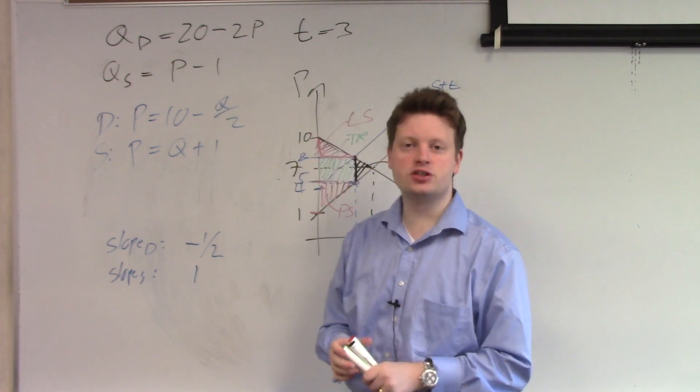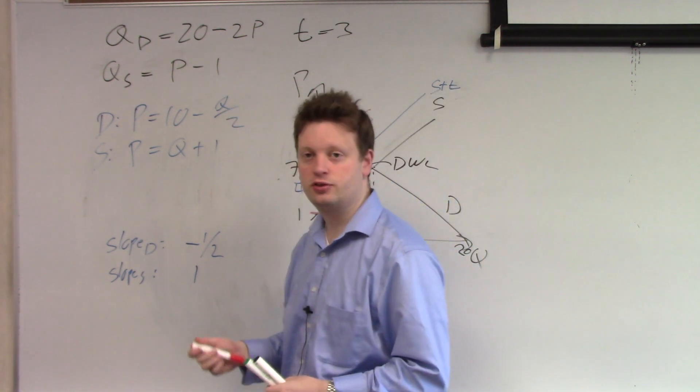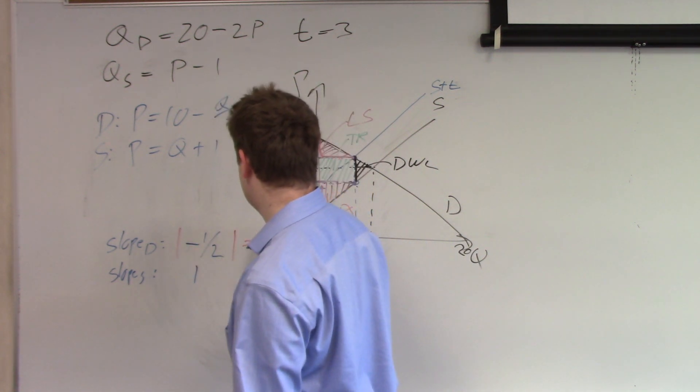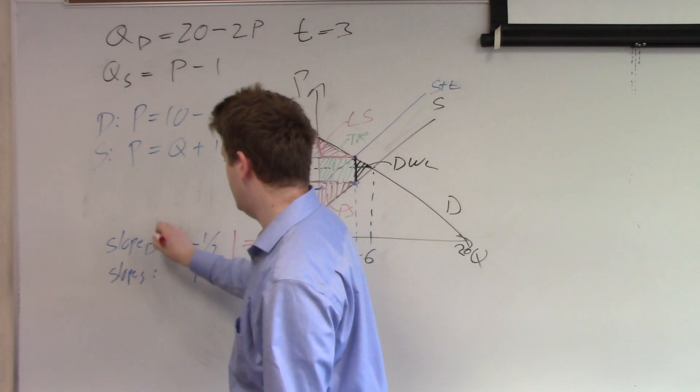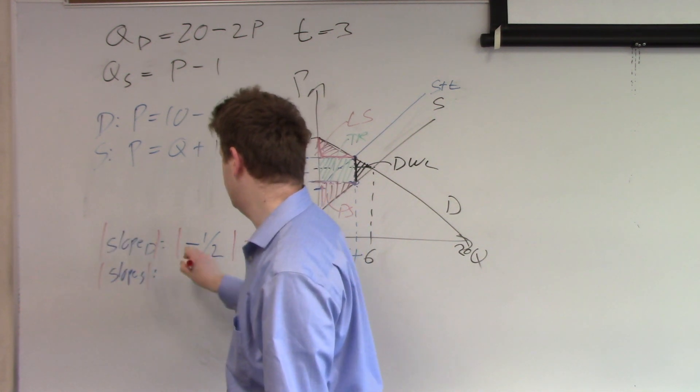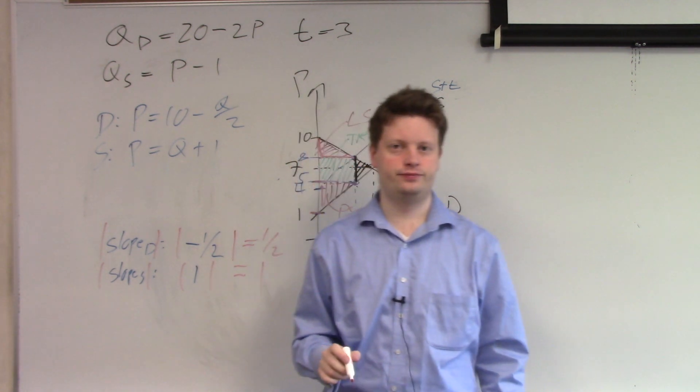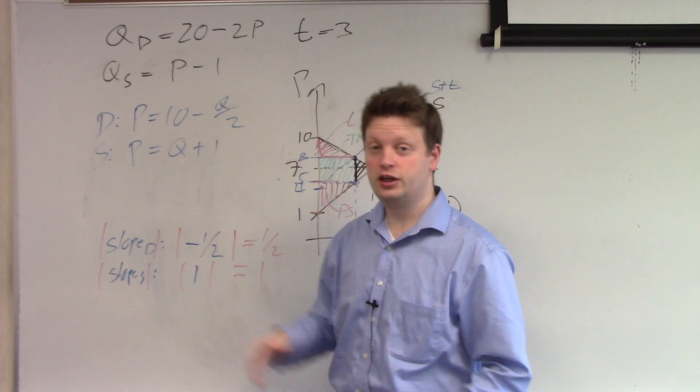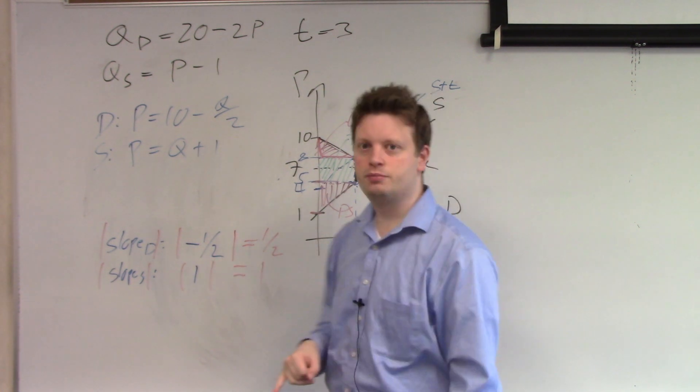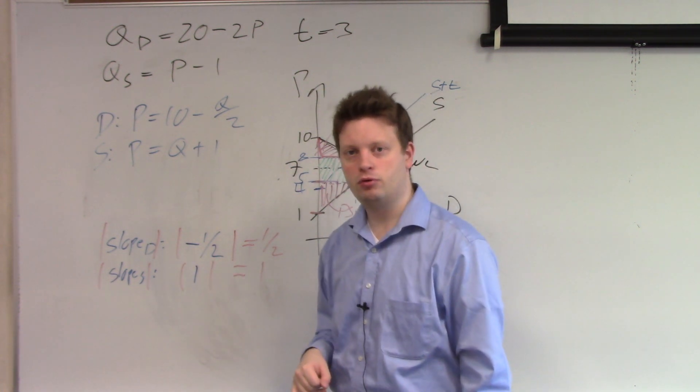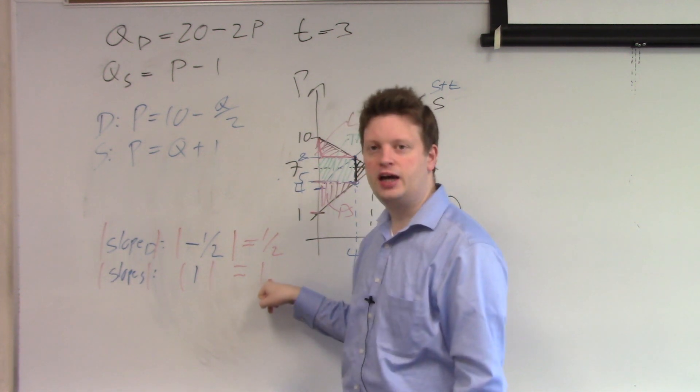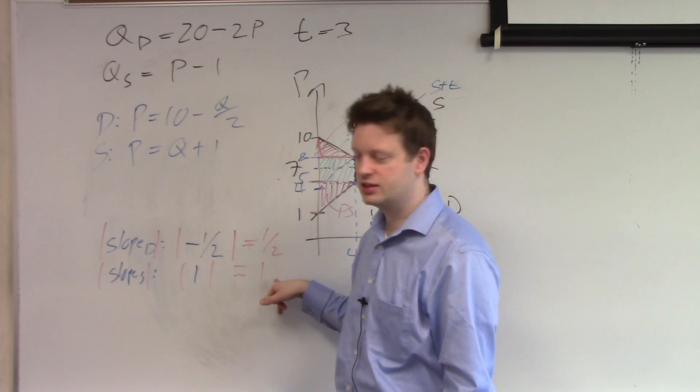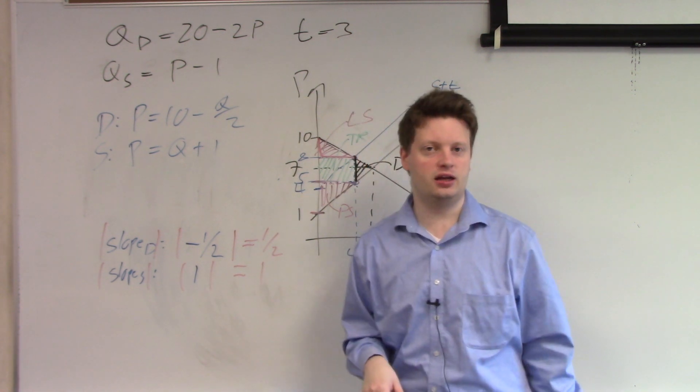Now if we look at the steepness of this curve, we need to take absolute values. So we get absolute value of this is 1 half and absolute value of this is 1. Now, the smaller the value, the flatter the curve. And the flatter the curve, the less of the burden of this tax will be borne. This means supply is steeper. Because supply is steeper, suppliers will bear the burden of the tax. They're the main ones paying for this tax.